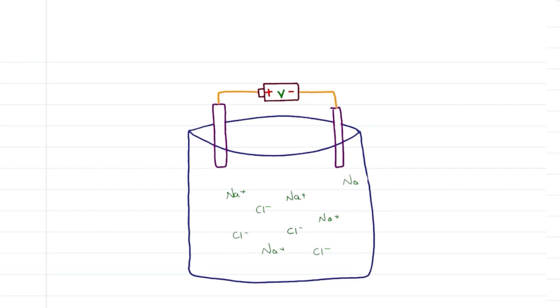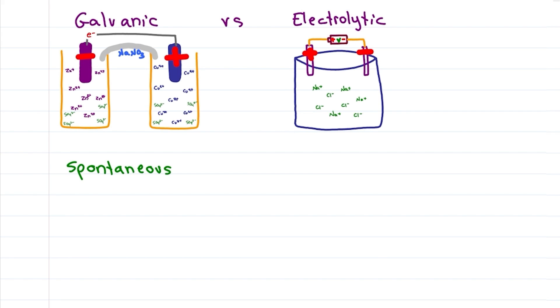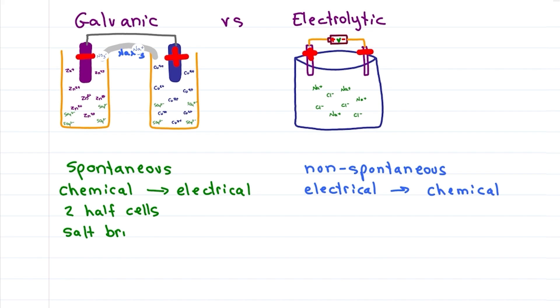What else is different between this and the galvanic cell? The galvanic cell is a spontaneous reaction where chemical energy is turned into electrical energy. Electrolytic cells are non-spontaneous and require an outside source of energy to turn electrical energy into chemical energy. In galvanic cells, the half cells must be separated, forcing the electrons into a wire where we can capture the energy. This requires a salt bridge to keep the net charges balanced.